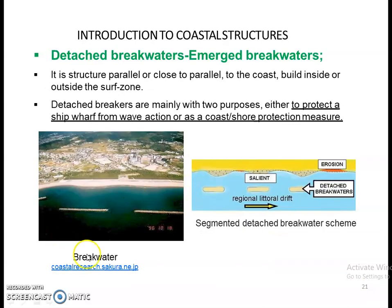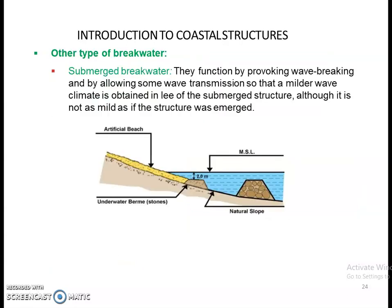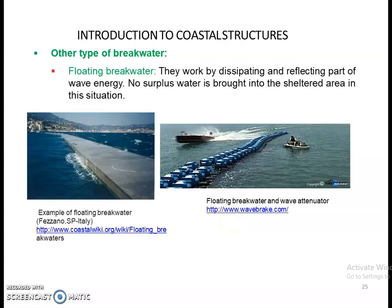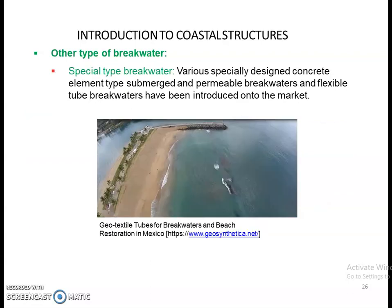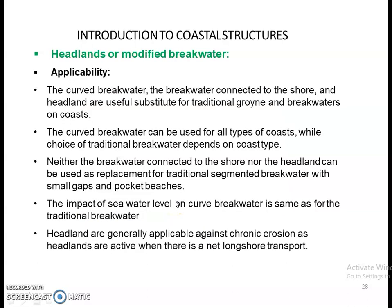Detached breakwaters are detached from the shore. They are close or parallel to the coast, built inside or outside the surf zone, and are also a protective measure for the coast. Some types of breakwaters are submerged, floating, and special types. This is a submerged breakwater which is under the water. An emerging breakwater may also be a floating type. Special types may be permeable or made of flexible tube breakwaters. A modified shape breakwater has its shape modified to prevent erosion.